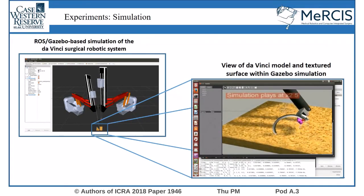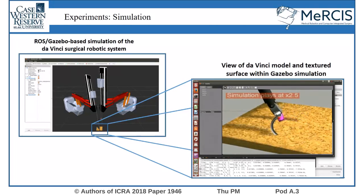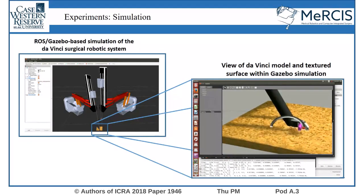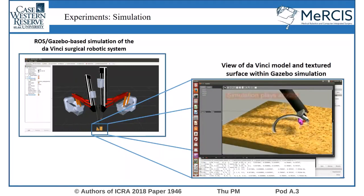The proposed method is quantitatively validated by evaluating the needle tracking accuracy under various noise conditions using a ROS-Gazebo-based simulation of the DaVinci surgical robotic system. This simulation environment provides a perfect baseline since the robotic calibration for kinematics and the joint sensor feedback are exactly known.